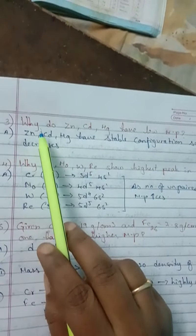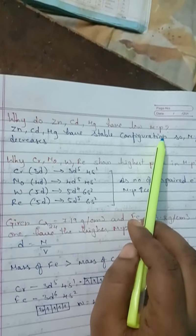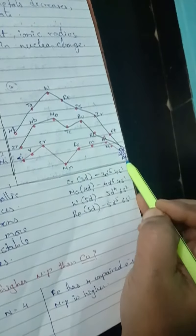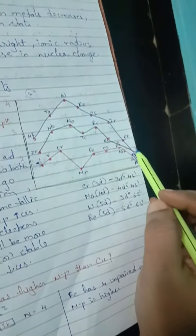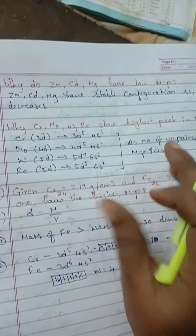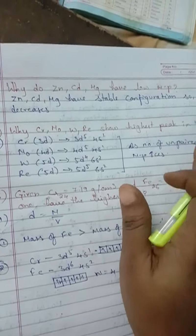Third question: why do zinc, cadmium, and mercury have low melting points? Zinc, cadmium, and mercury are present at the end. If they have a low melting point, that means they have fewer unpaired electrons or they have a stable electronic configuration.